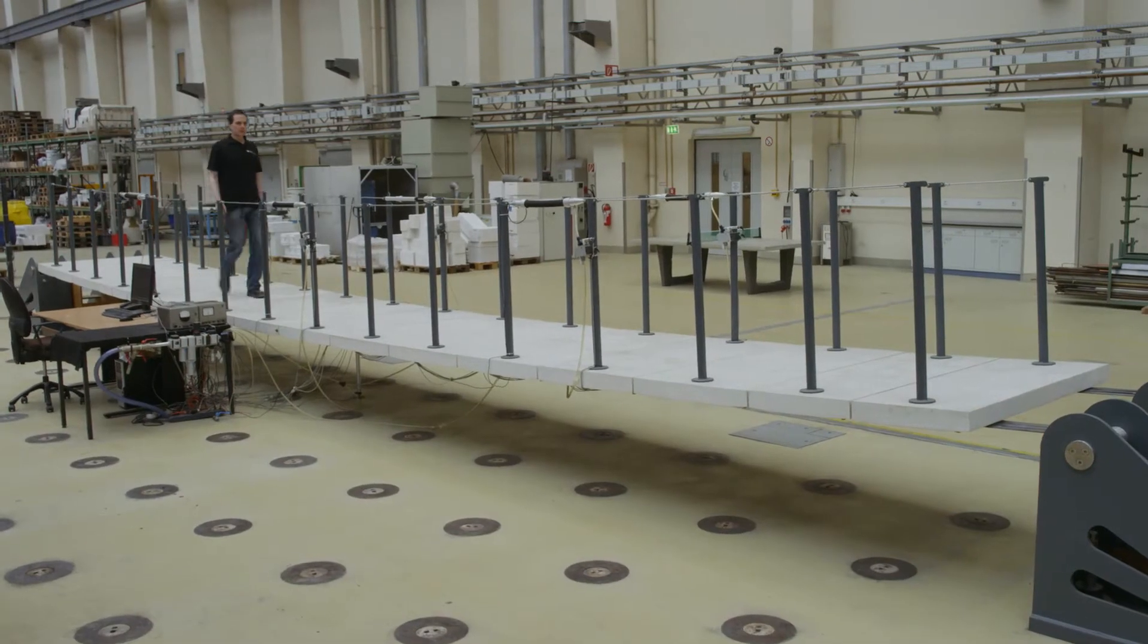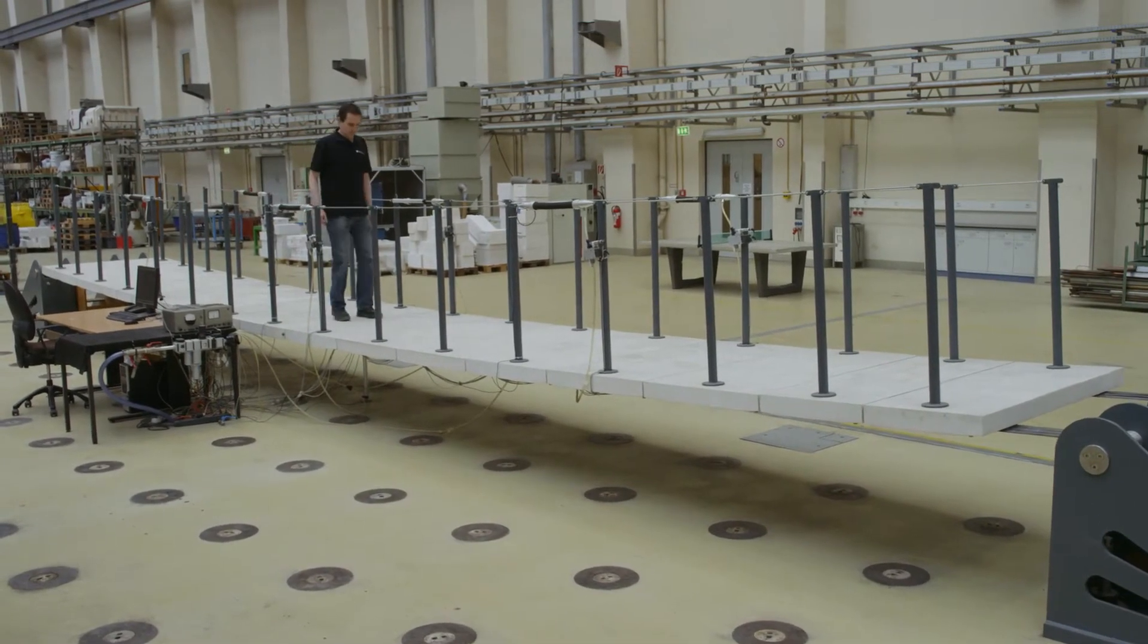Lightweight structures are sustainable in the true sense because they minimize the use of material and resources. This is a super lightweight structure and therefore really sustainable. But the price we pay is liveliness. This bridge really moves a lot when you walk over it.